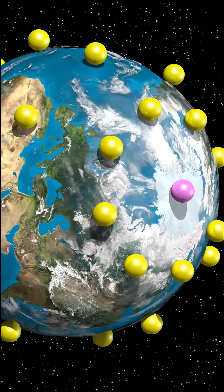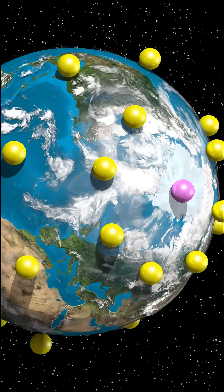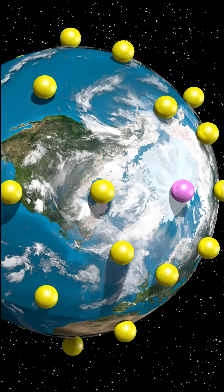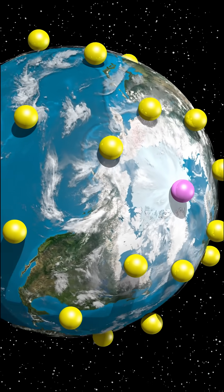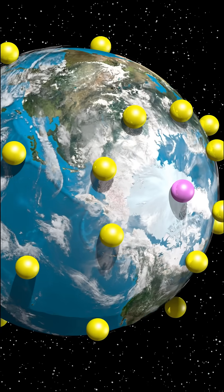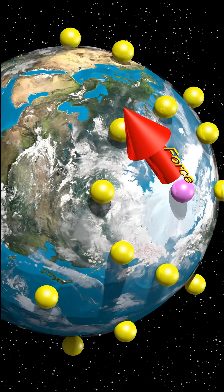The purple sphere at the North Pole is standing still. If we apply a force and ignore friction and air resistance, the purple sphere will follow this path.